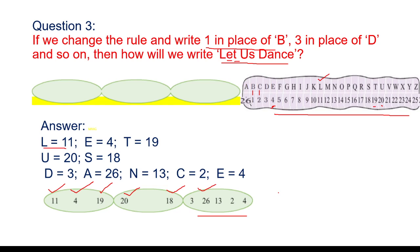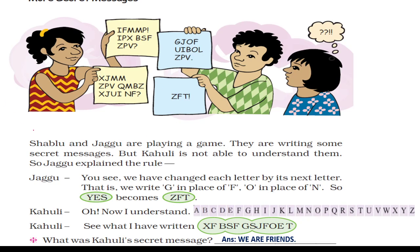Moving to the next page: here we have some more secret messages. Shablu and Jaggu are playing a game and writing secret messages, but Cowley cannot understand them. Jaggu explained the rule: each letter is replaced by its next letter — so F becomes G, N becomes O. Now look here at what Cowley has written. The coded message contains X and F.